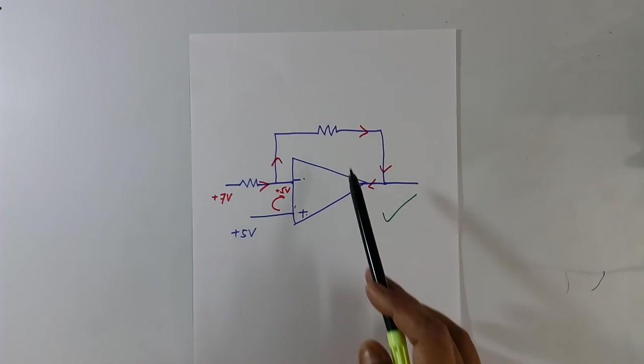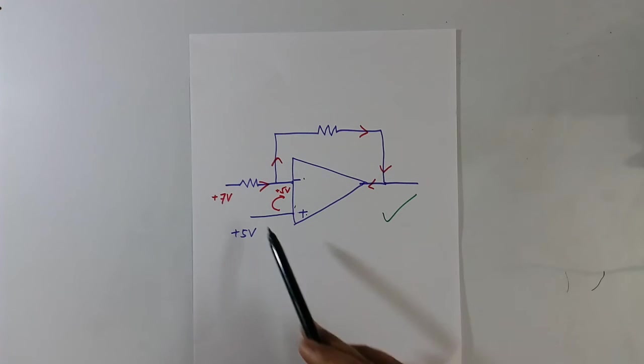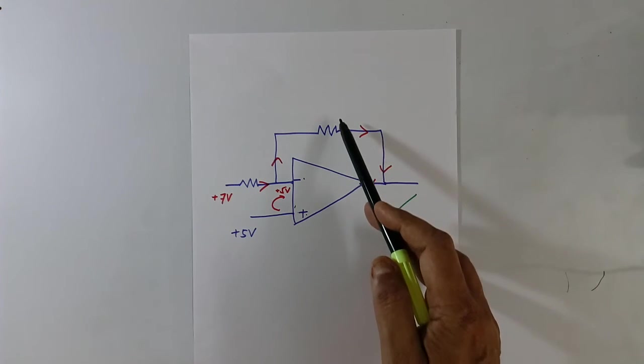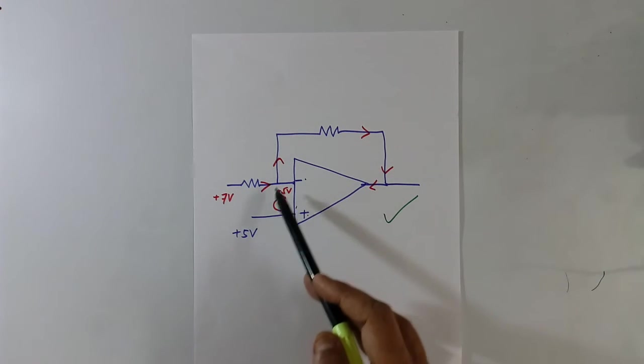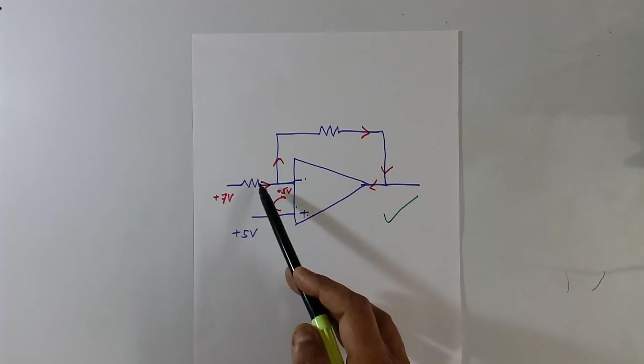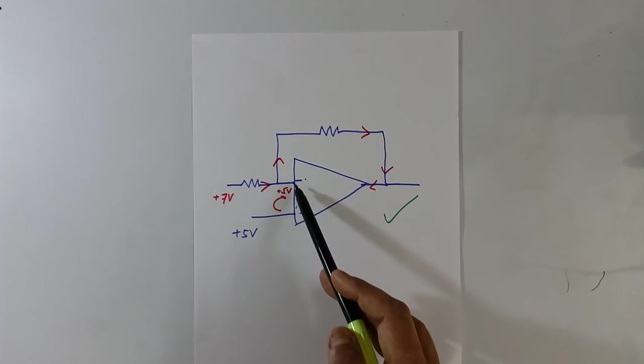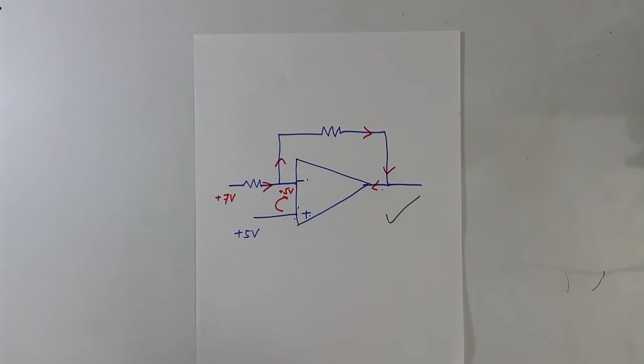So this resistance is must to operate the IC in linear range. If this is not there, it will go to saturation mode. Why this is essential? Now you know. Because if this is not there, current will flow. This voltage will not be equal to this voltage, and it will go to saturation mode.